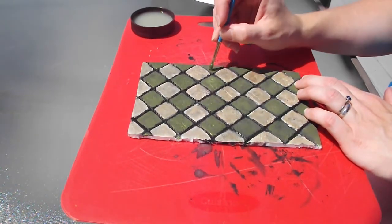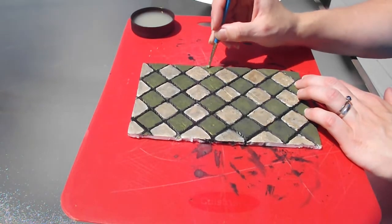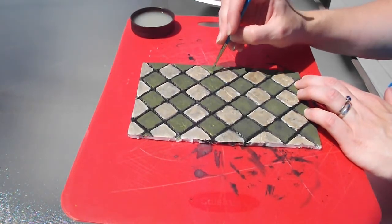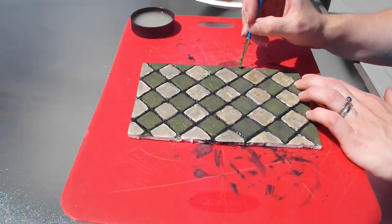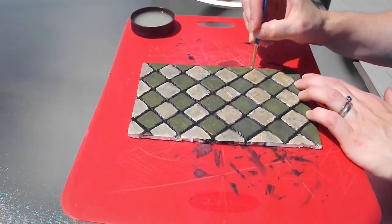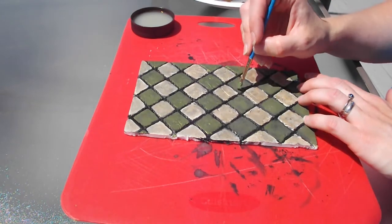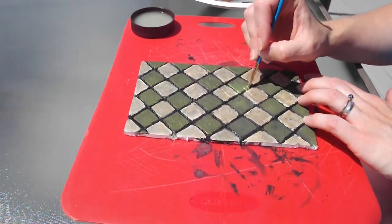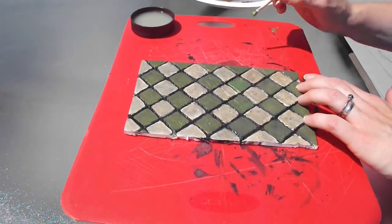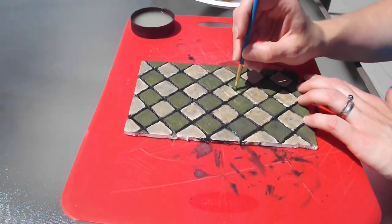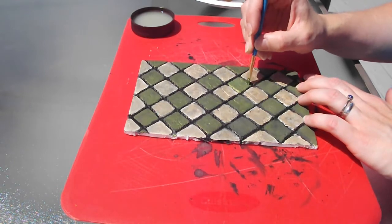And you start seeing it take shape and really get the look of that interesting finished tile. As you can see, I forgot to dry brush a little bit here, so I'm just going to pick that back up.